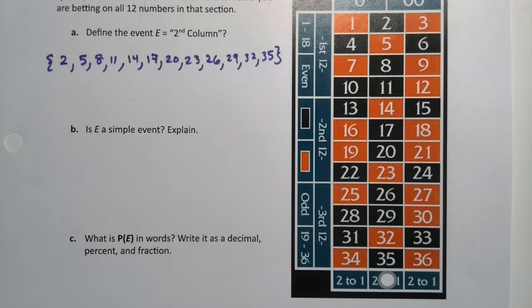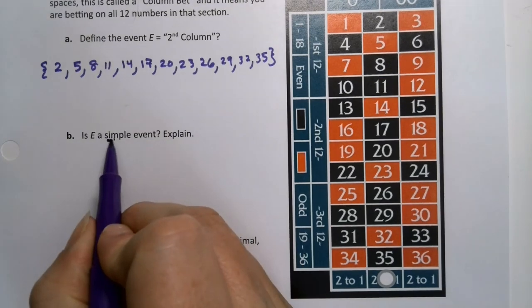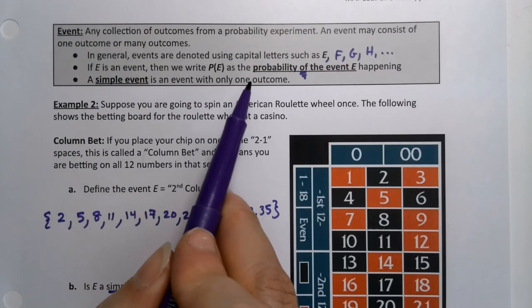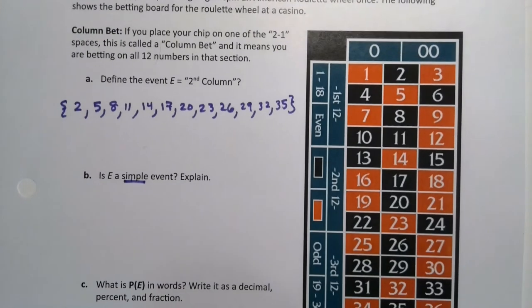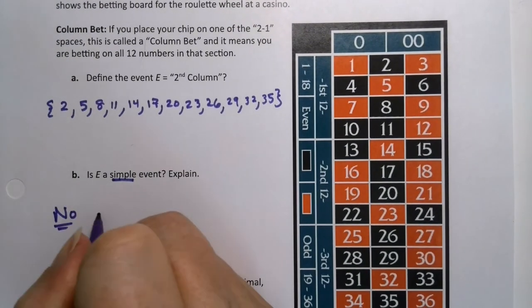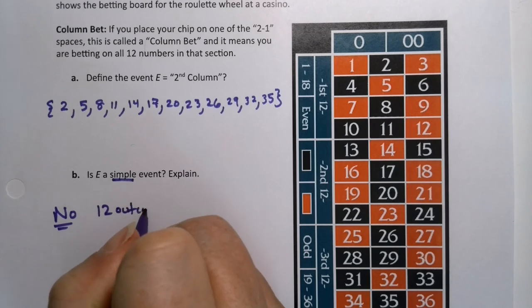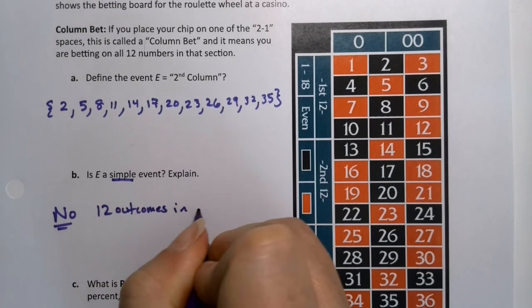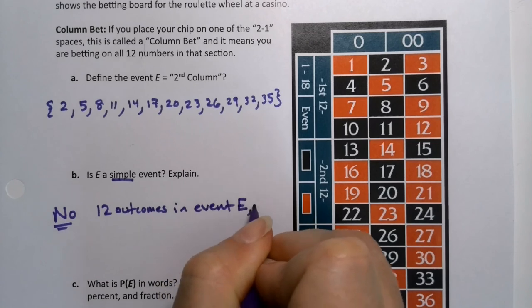Is event E a simple event? No, no, no, no, no. A simple event is one that has only one outcome. But we have, well, let's see, 12 outcomes. So this would be a no. There are 12 outcomes in event E, not one.